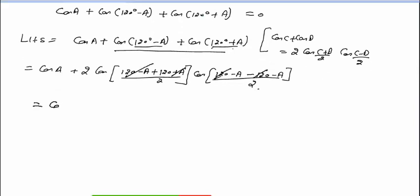तो cos A plus 2 cos — 120 plus 120 is 240, ये A minus A cancel हुआ। तो 240 by 2, means 120 आ गया। Correct.